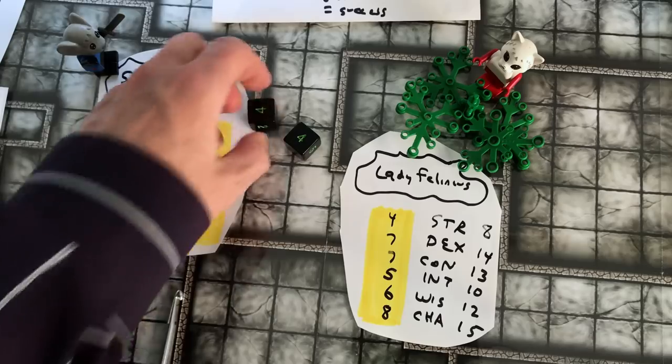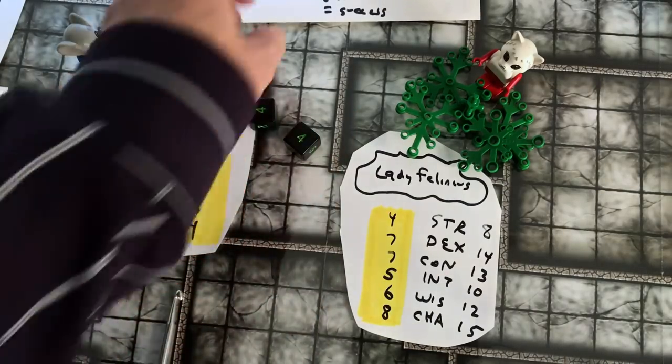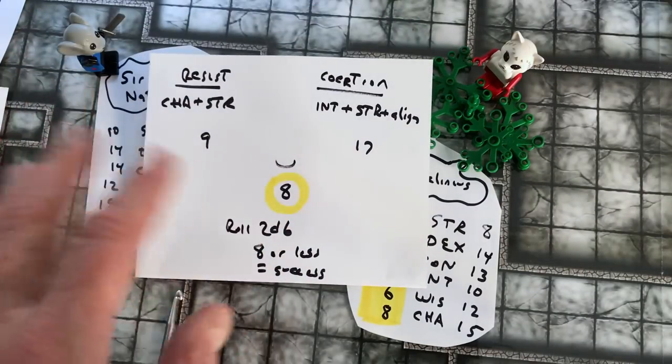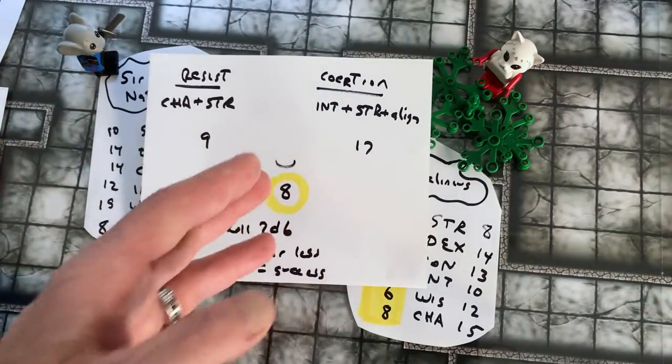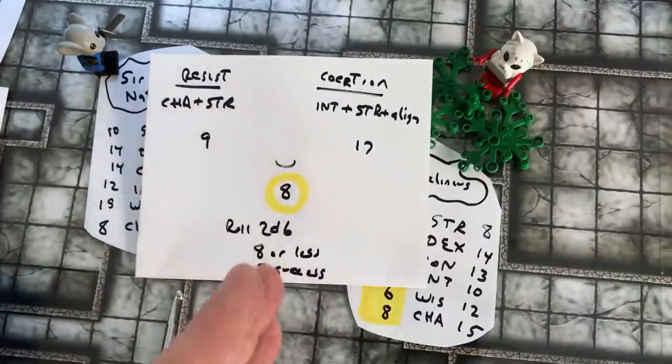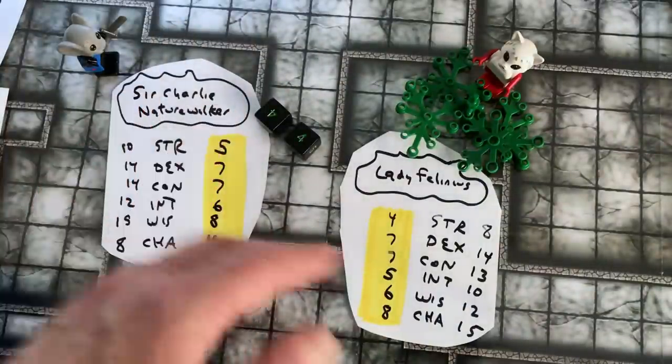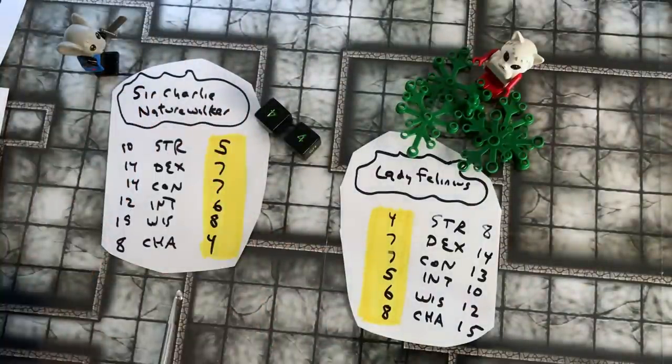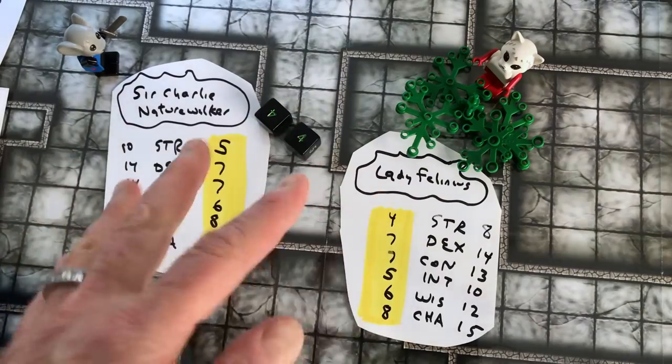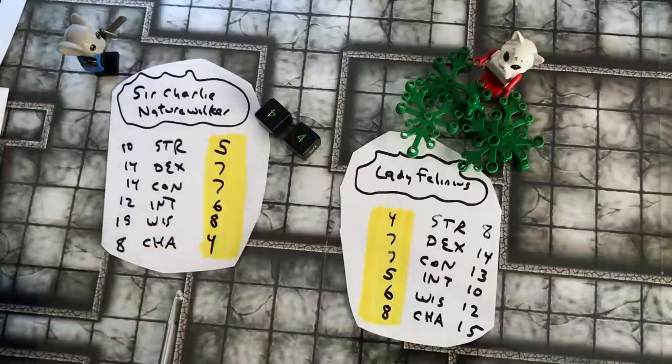And indeed she did, she got an 8, so she was successful here. She would be more successful in applying a coercive social technique against him because of her alignment, so it works out in theme with your character's development and personality.